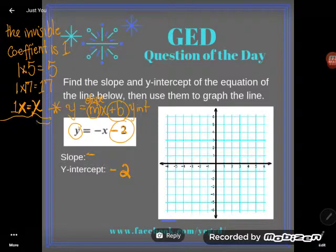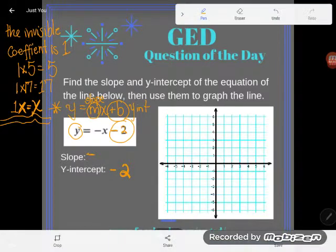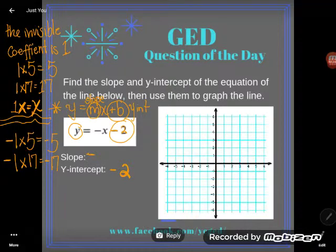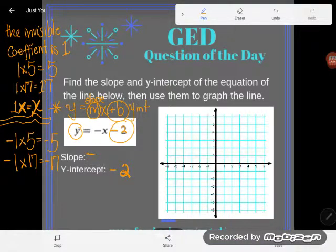Now you might be saying, Kate, but mine doesn't look like that. It has a negative. Well, let's check it out with negative 1. So if you took negative 1 and multiplied by 5, well the 5 wouldn't change. The only thing that would happen is it would turn negative, negative 5. And negative 1 times 17, same thing. I wouldn't see a number change. It would be the same number, 17, but now it would be the opposite, negative 17.